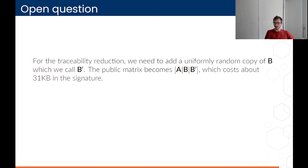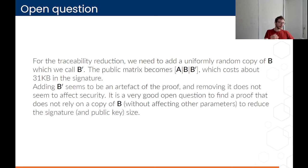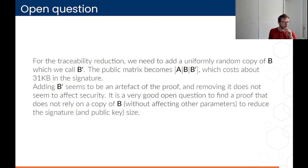There is one open question. For the traceability reduction, we need to add a uniformly random matrix B prime of the same size as B to the public key — so instead of just A, B, and U, the public key becomes A, B, B prime, and U. This has quite a big cost in the signature. This B prime seems to be an artifact of the proof — if we remove it, it doesn't seem to affect security, but we need it to make the proof work. It would be an interesting question to find a traceability proof for this group signature that doesn't rely on B prime, to reduce the size of the signature.